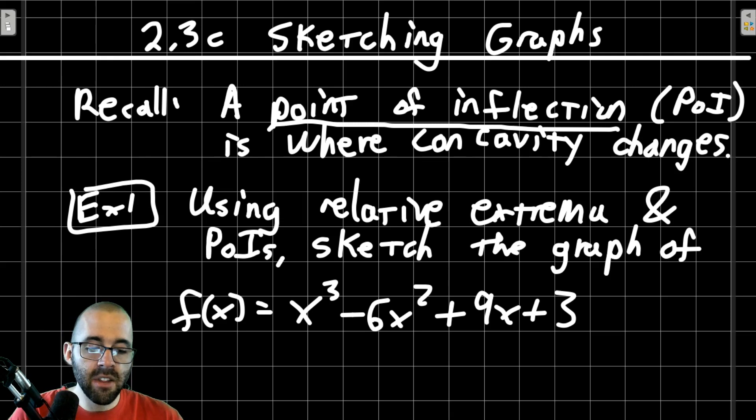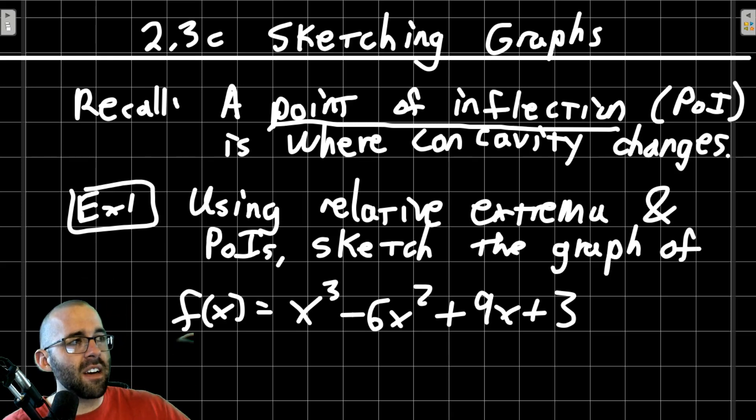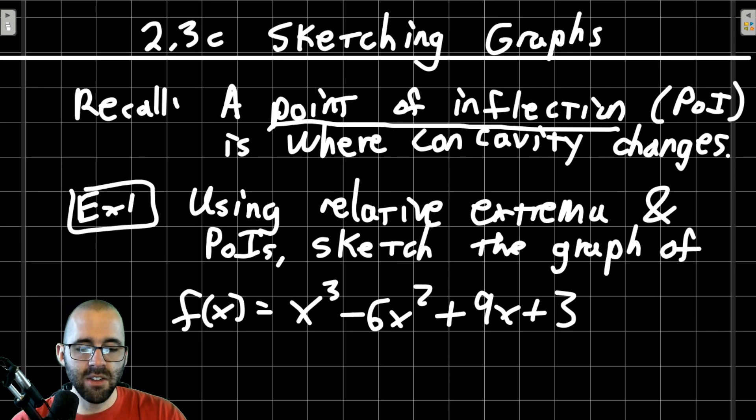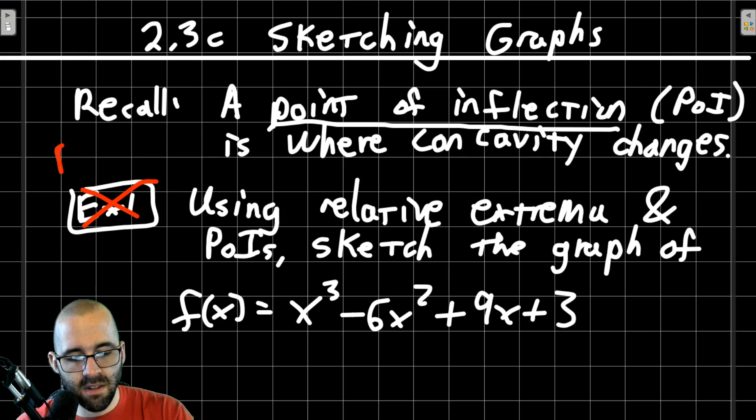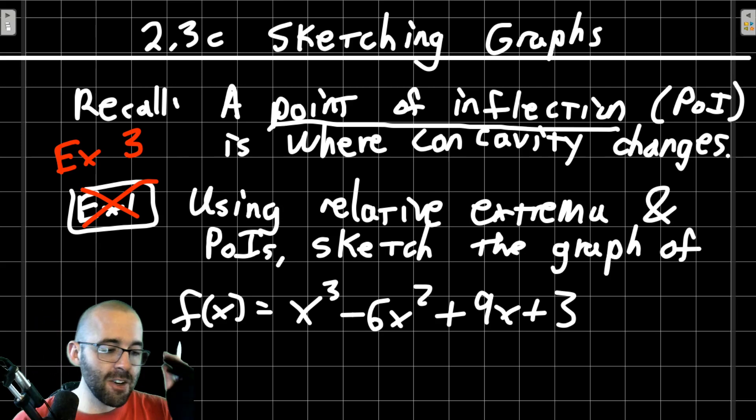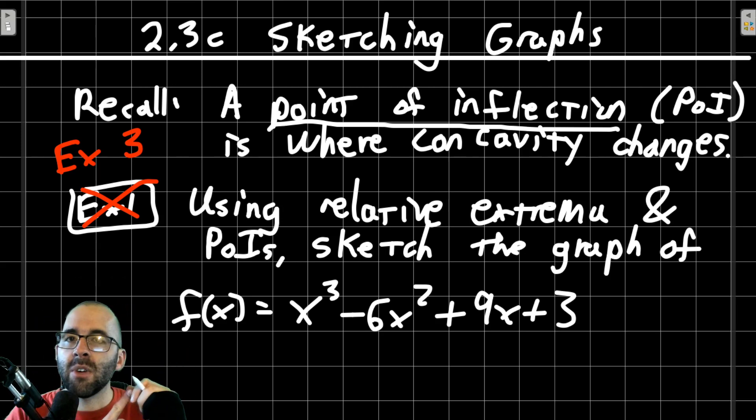So first part of this, and the last part, is just like our previous example. I don't know why I say example 1. This is example 3. We're going to find the relative extrema. We'll classify them with the first or second derivative test. We'll find the points of inflection by setting the second derivative equal to 0, and then we'll plot all the information.